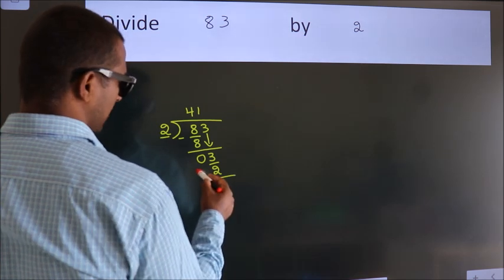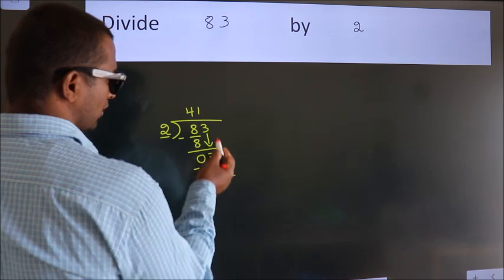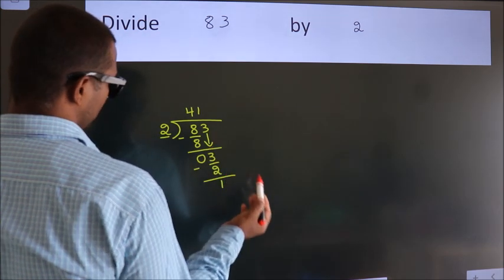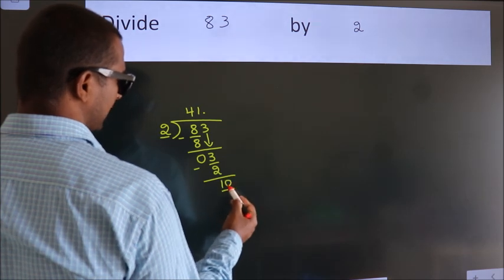Now, we subtract. We get 1. After this, no more numbers to bring it down. So, what we do is, we put dot take 0. So, 10.